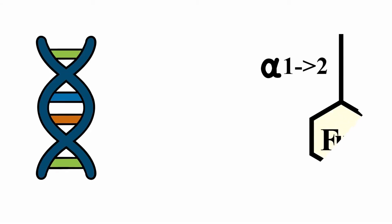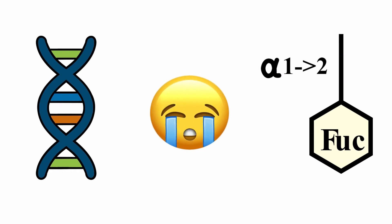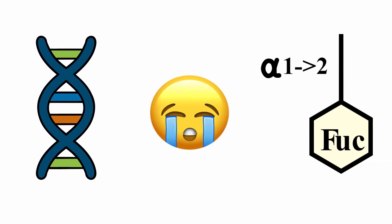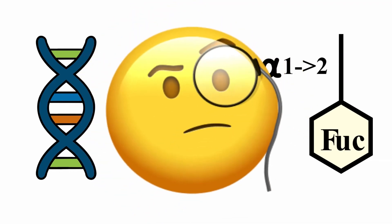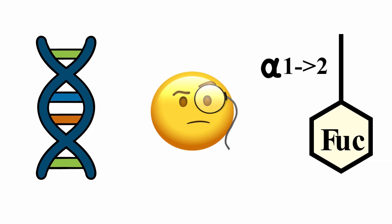Now that we know about the genetics and structure of the H antigen, and that H antigen is a precursor for ABO blood groups, let me throw a curveball. What if there is no expression of the H antigen? What would the blood type of a person be? Just take a moment and think about it. If there's no foundation, can you build anything on top?